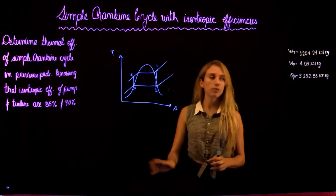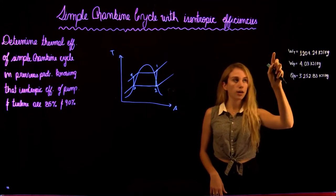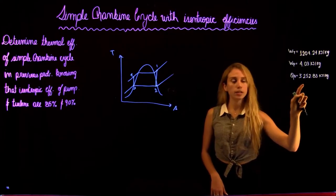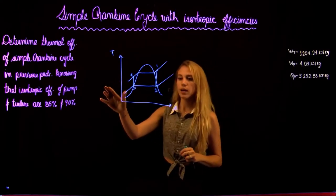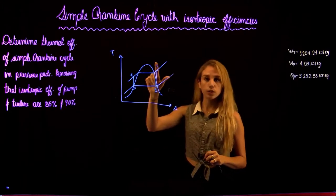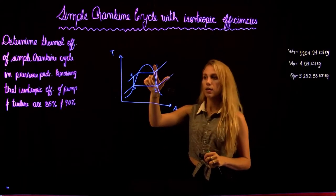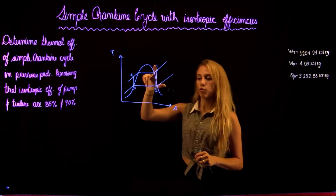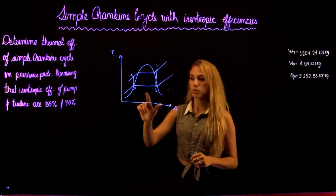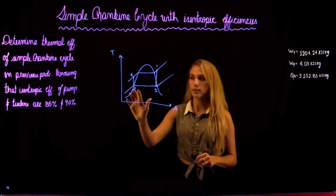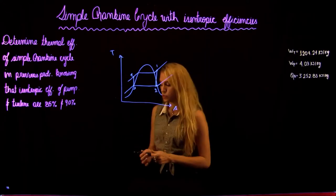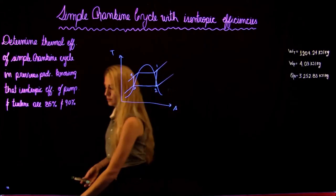In the previous problem, we found the work of the turbine, pump, and the heat input in the boiler. We also have a TS diagram. We have state 1, which is before the turbine. The fluid expands to state 2, then it goes through the boiler to state 3, then it gets pumped to state 4, and then it goes back to the boiler. This assumes a perfect, ideal case.